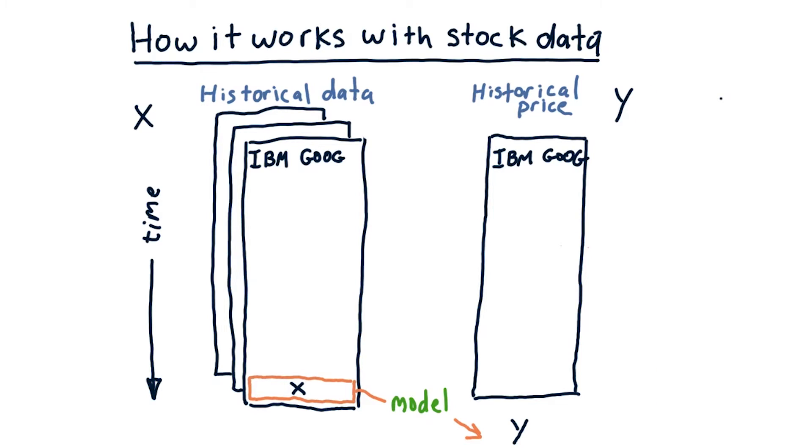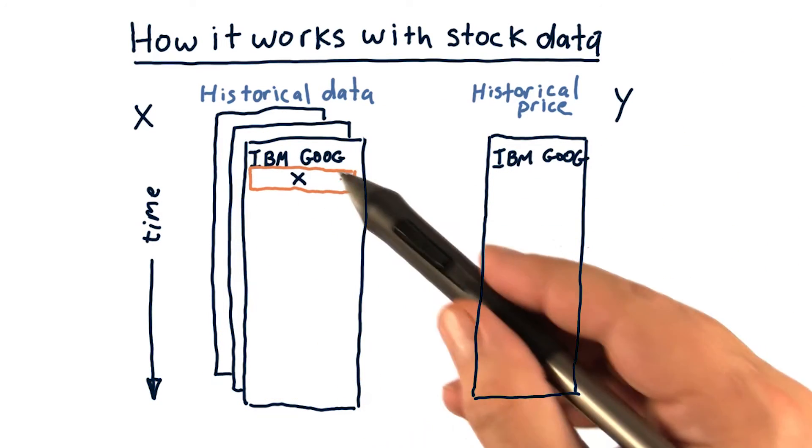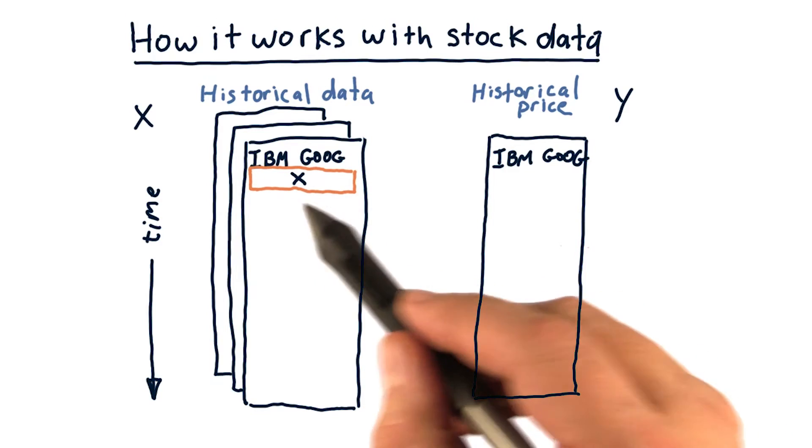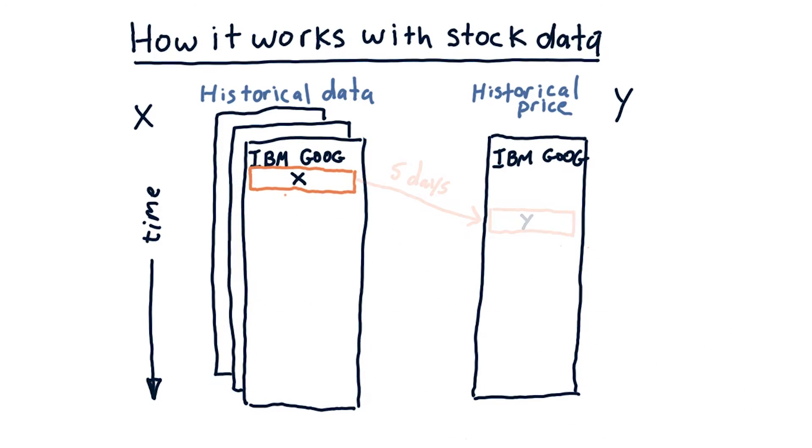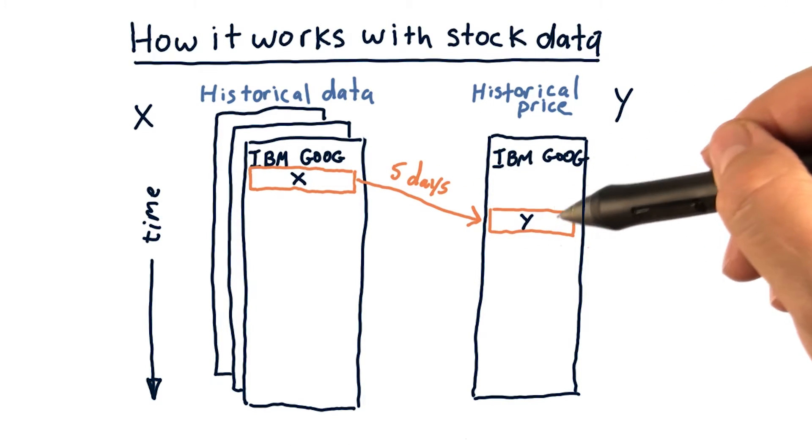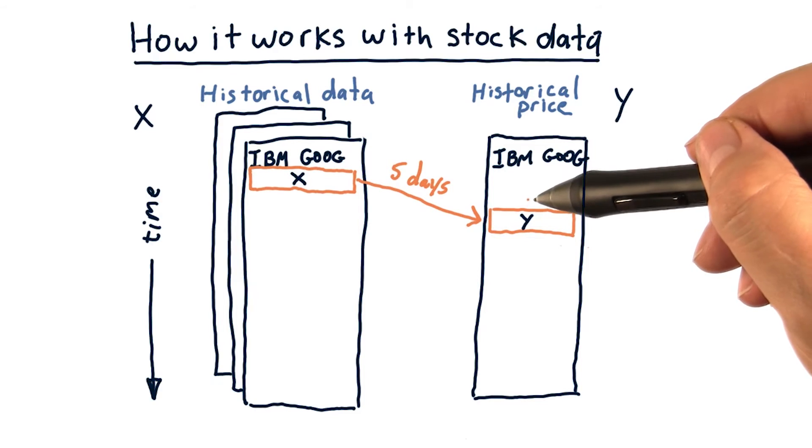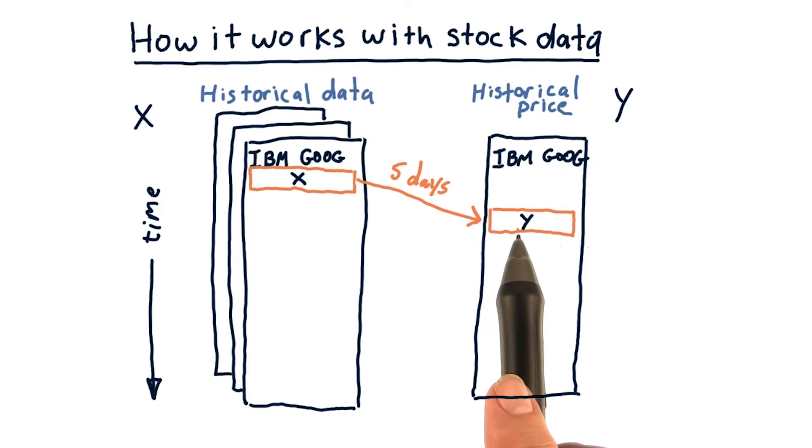Well, we don't have that model yet. We've got to learn it from data. So here's how we do that. We roll back time so that we're back in history here at our first data point. We look at the values of our features there. And then we look, say, five days into the future to see what that future price is. So now we've got a pairing of these features with that future y.